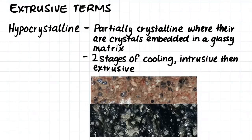The last term we will look at today is hypocrystalline. Hypocrystalline rock is a partially crystalline rock where the crystals are embedded in a glassy matrix. This type of rock indicates that the magma has undergone two stages of cooling: intrusive and then extrusive. The crystals formed when the magma was underground and cooling slowly, then the molten rock was ejected onto the surface and cooled very quickly, creating the glassy matrix.